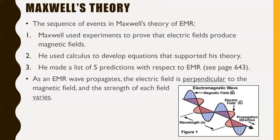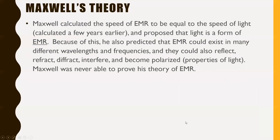As an EMR wave propagates, the electric field is perpendicular to the magnetic field and the strength of each field continuously varies — going up and down. Maxwell calculated the speed of EMR to equal the speed of light, and proposed that light is actually a form of EMR. He also predicted that EMR could exist in many different wavelengths and frequencies, and could reflect, refract, diffract, interfere, and become polarized — all properties of light, like a mirror reflecting light or a lens refracting it.